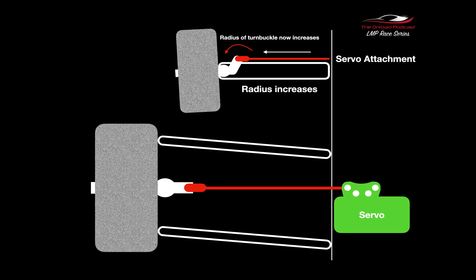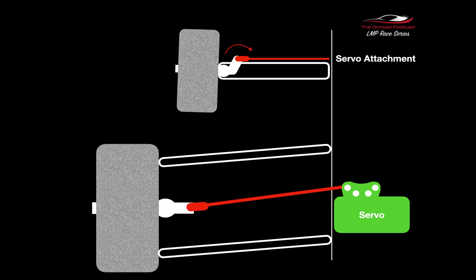It then goes back down and load, so it unloads the suspension. It pulls the turnbuckle back the other way and now is going to pull the wheel back towards the center line.